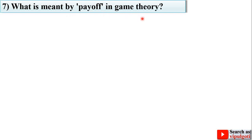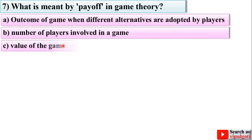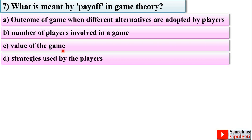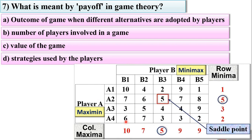Next question: what is meant by payoff in game theory? Options are as follows. Looking at this image, the payoff is the outcome of the game when different strategies are followed by player A as well as player B — it represents the outcomes for all the different strategy combinations. So A is the right answer: the outcome of the game when different alternatives are adopted by the players.